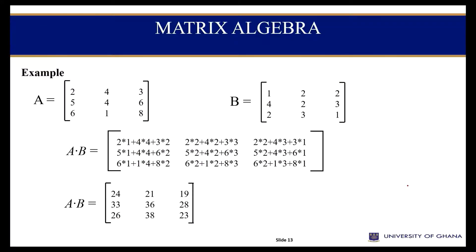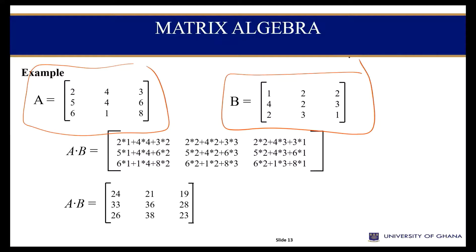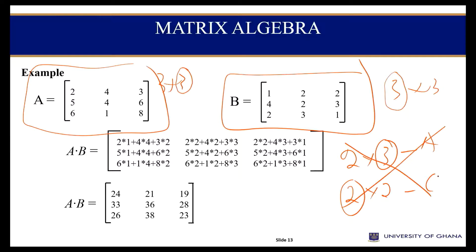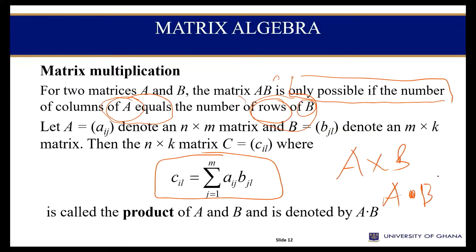Looking at the example: matrix A and matrix B are both 3×3 dimensions. I can only multiply them if the number of columns in A equals the number of rows in B. If you have a 2×3 and a 2×2 matrix, they cannot be multiplied because they do not satisfy this condition.